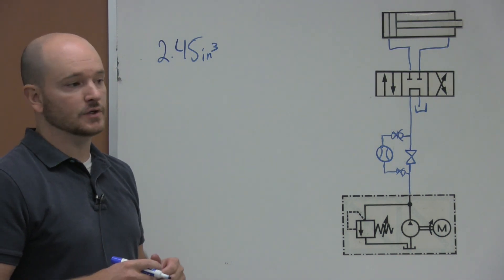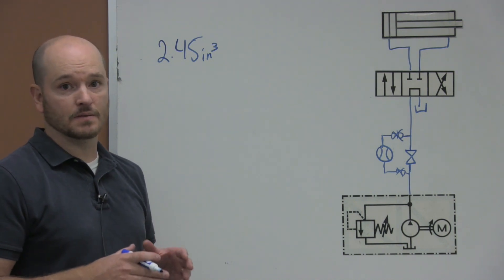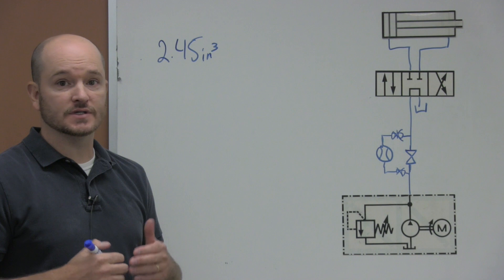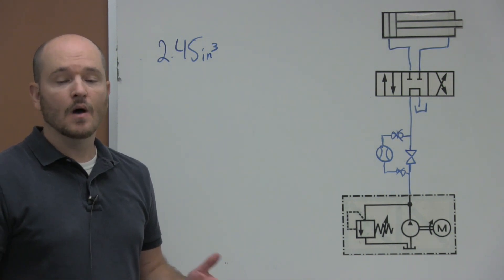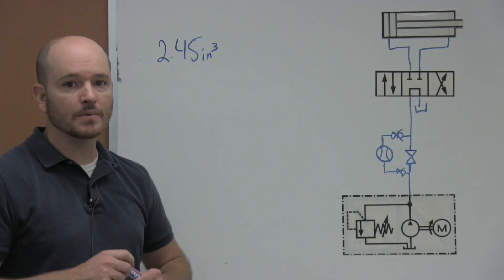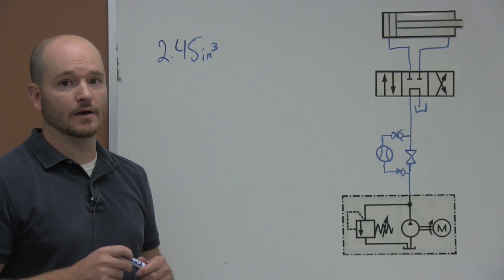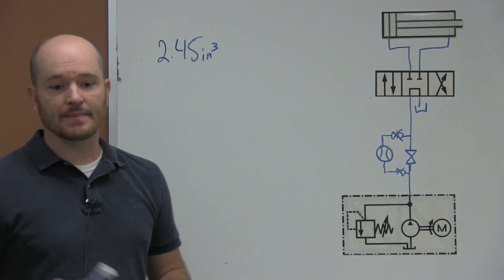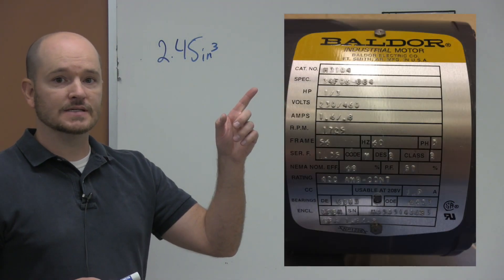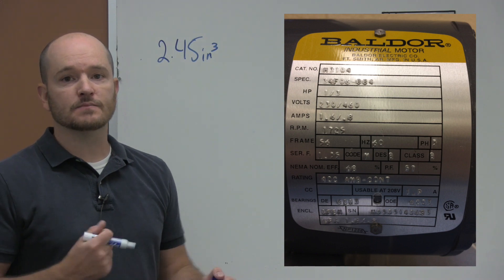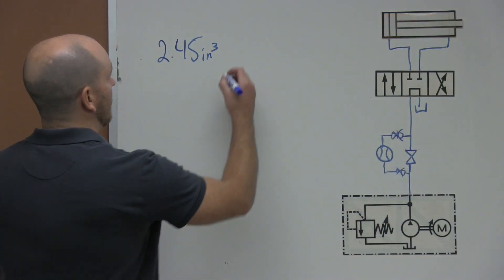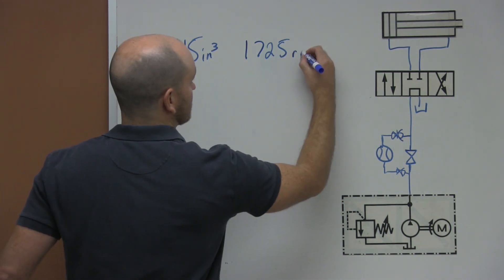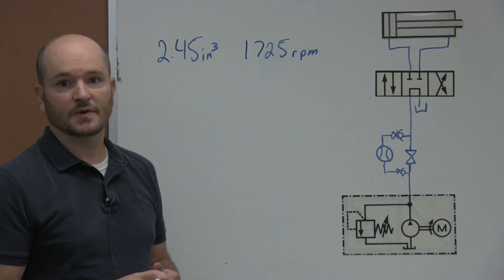Then the next thing we have to do is figure out how fast the pump is going to be moving. This is always a question: why don't the manufacturers just tell you what the gallons per minute is? Well, the manufacturer probably doesn't know how fast this electric motor is going to be spinning. So I went ahead and snapped a picture of a nameplate, and we're going to assume that this motor is rotating at 1,725 rotations per minute.